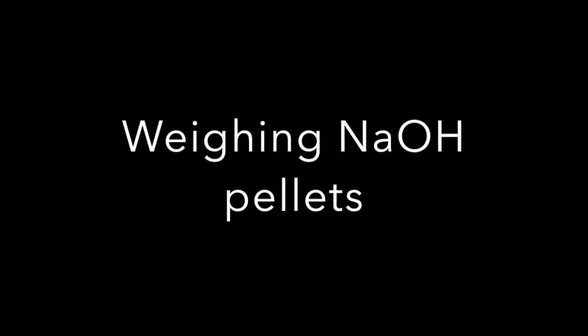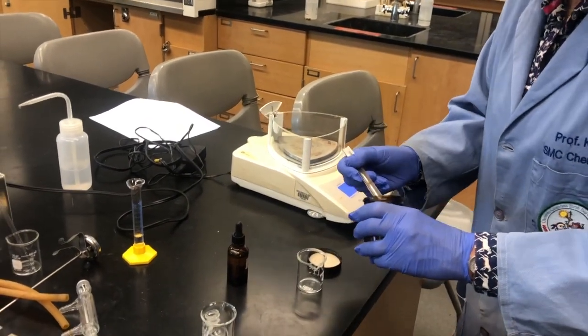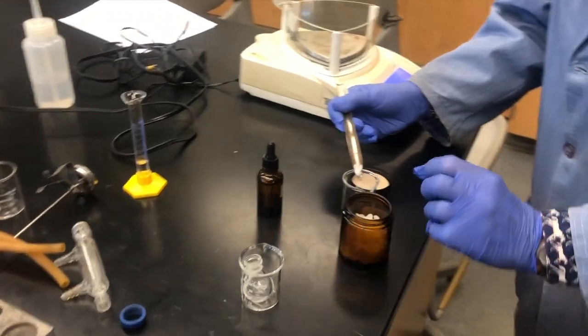The first step in the procedure is to weigh out the sodium hydroxide pellets and add it to 3.5 milliliters of water in the round bottom flask. While using proper PPE, we weigh out a few pellets onto the balance.